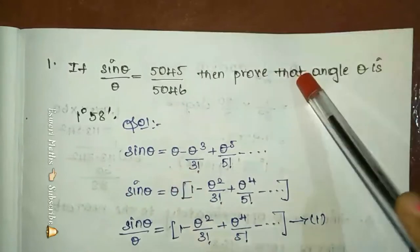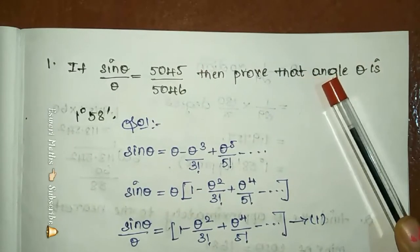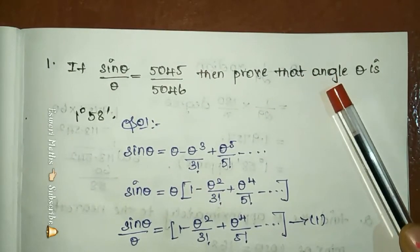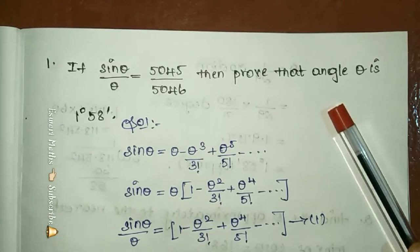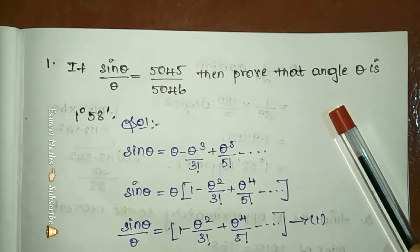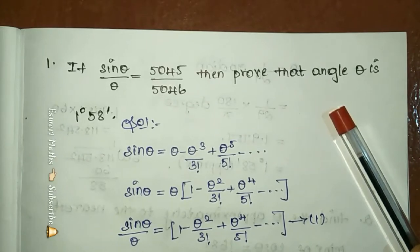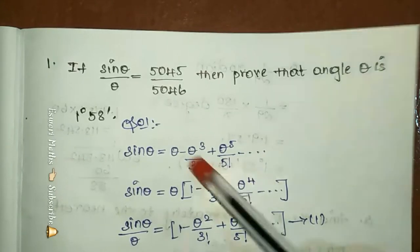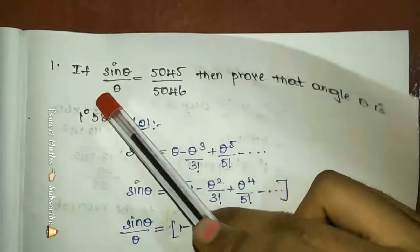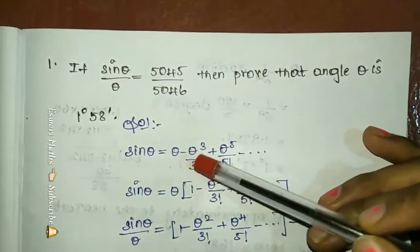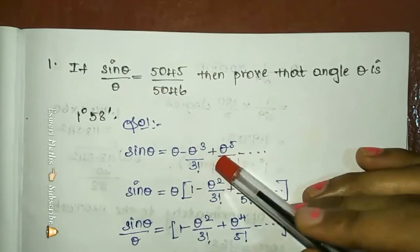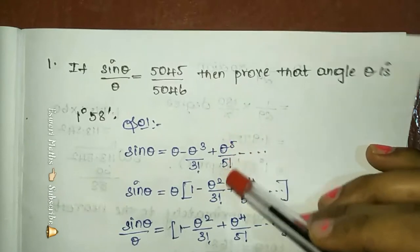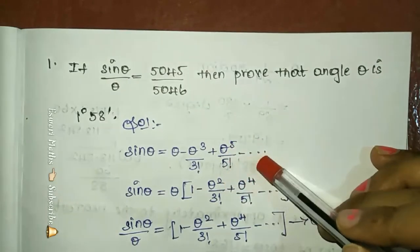We will look at this equation and use this equation. Sin theta is equal to theta minus theta cube by 3 factorial plus theta to the 5 by 5 factorial, continuing to infinity.